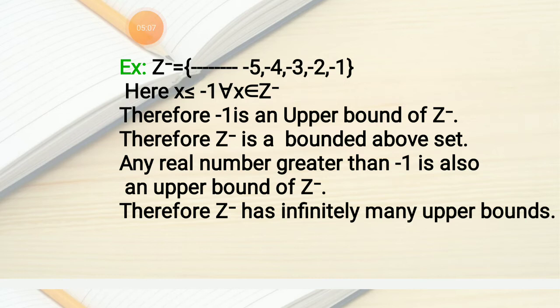So Z⁻ has infinitely many upper bounds. Naturally, if you find one upper bound, then any number greater than that upper bound is also an upper bound. So whenever you take any bounded above set, it has infinitely many upper bounds — any real number greater than an upper bound is also an upper bound.